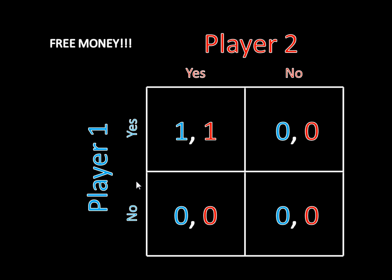If you're player two, you have to choose yes as a pure strategy. If you vote no, you're getting nothing guaranteed. But if you vote yes, then whatever percentage of the time player one votes no you still get zero, but some percentage of the time — because player one is voting yes some of the time — you do get one. So by voting yes in response to player one's mixed strategy, you get a positive amount some of the time. Voting no guarantees nothing. So player two must play yes in response to player one's mixture.